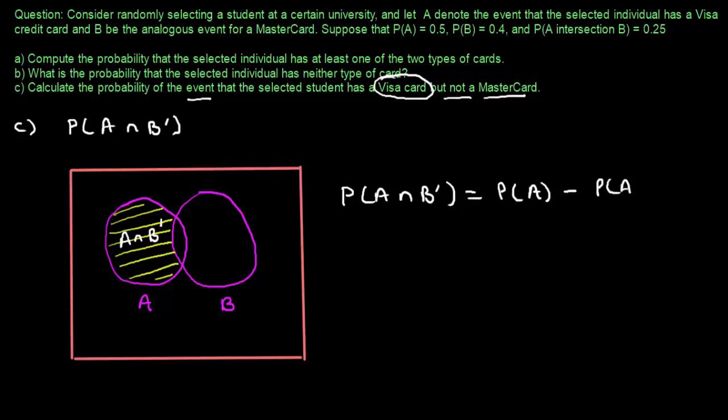So the probability of A intersection B complement equals the probability of A minus the probability of A intersection B. This gives us 0.5 minus 0.25, which equals 0.25. So the probability that the selected student has a Visa card but not a MasterCard is equal to 0.25.